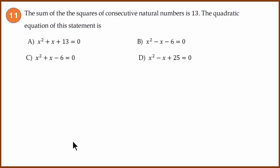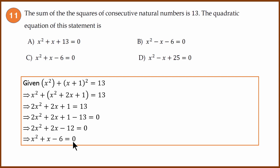Question 11: The sum of squares of consecutive natural numbers is 13. The quadratic equation of this statement is? Consecutive natural numbers are x and x + 1. Their squares are x² + (x + 1)² = 13. Expand to get x² + x² + 2x + 1. This is (a + b)² expansion. That equals 13. Simplify to get 2x² + 2x + 1 = 13. Bring 13 to the left hand side: 1 - 13 is -12. Divide the whole expression by 2: x² + x - 6 = 0. The answer is C.